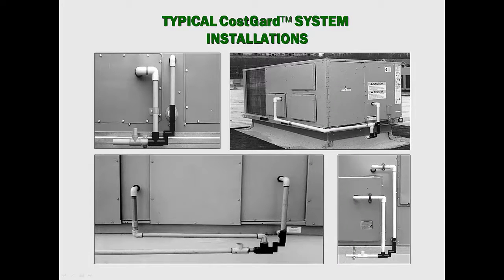Four typical field installations of the CostGuard condensate drain system are shown here. Note that in order to form the air seal, three pipe connections are required. In addition to the drain pan connection, two other pipe connections are necessary. One pipe enters the drain pan compartment at point A. The other pipe enters the air supply plenum, or air supply duct, at point B.